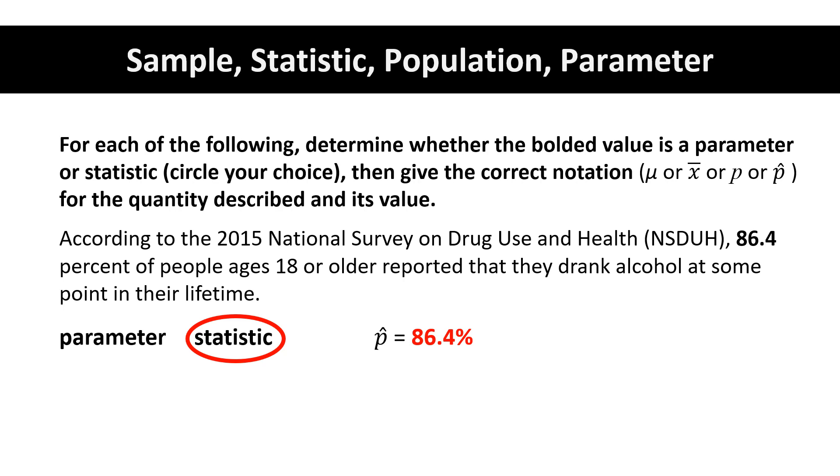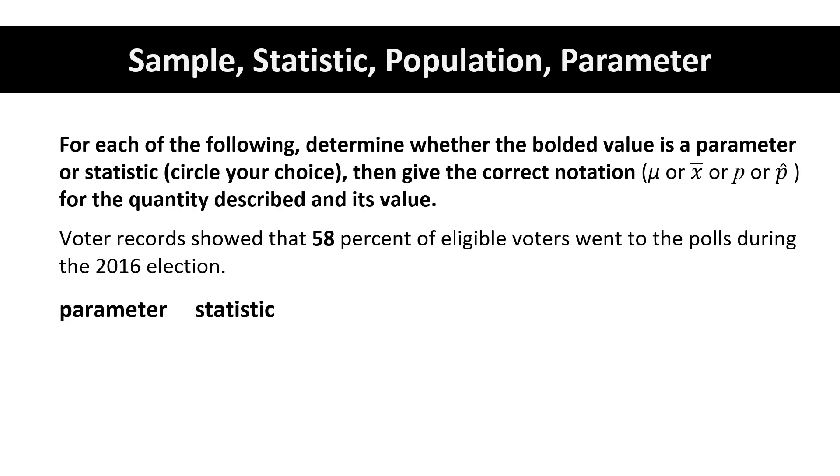Voter records show that 58% of eligible voters went to the polls during the 2016 election. Because we are talking about all the voters during the 2016 election, this is a population.